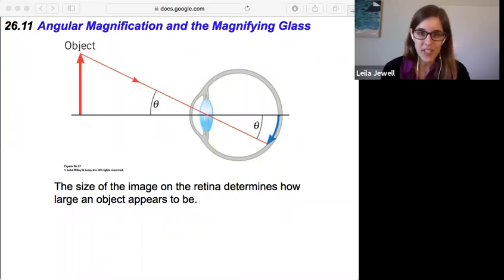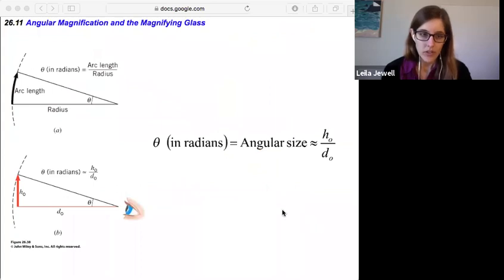Okay, section 26.11: angular magnification and the magnifying glass. So it turns out the size of an image on the retina determines how large an object appears to be. You can show the geometry that if your object is bigger, it takes up a larger angle, and that will be proportional to the angle that it forms on your retina. This has a couple of interesting implications, but let's take a closer look at it first and how it connects to things.